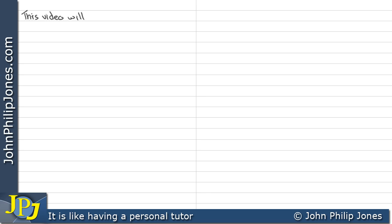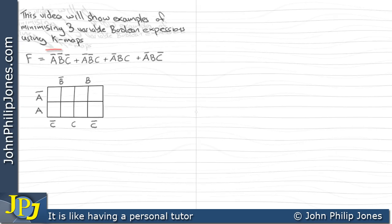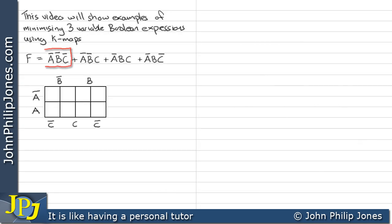This video will show examples of minimizing three-variable Boolean expressions using Karnaugh maps. If we look at this minterm we can see it's not A, not B, not C.